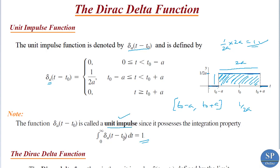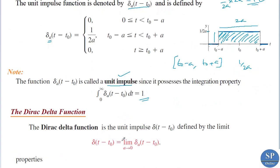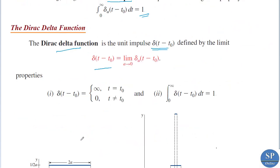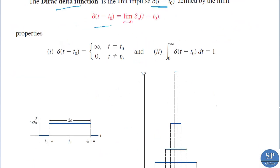Now we talk about the Dirac delta function. The Dirac delta function is also a unit impulse and is denoted by δ(t − t₀). It is the limiting case of the unit impulse function δₐ(t − t₀), that is, δ(t − t₀) = lim(a→0) δₐ(t − t₀). So if we apply this limit as a tends to 0 on the unit impulse function, we obtain the Dirac delta function.